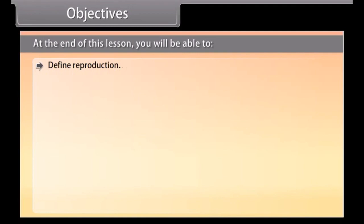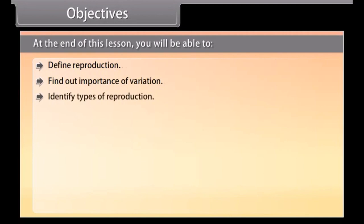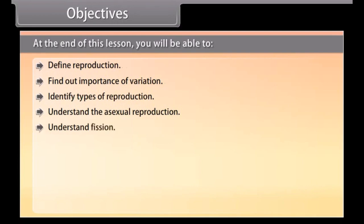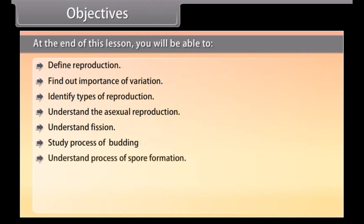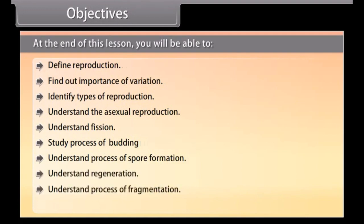Objectives. At the end of this lesson, you'll be able to: define reproduction, find out the importance of variation, identify types of reproduction, understand asexual reproduction, understand fission, study the process of budding, understand the process of spore formation, understand regeneration, understand the process of fragmentation, and find out vegetative reproduction.